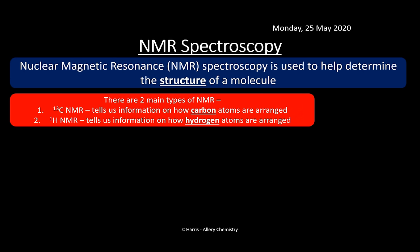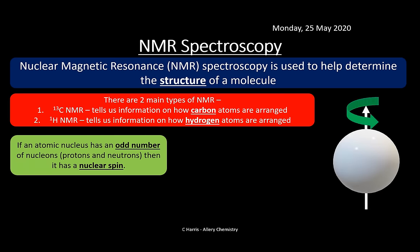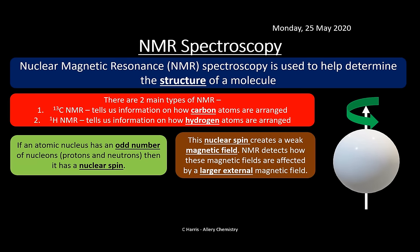If an atomic nucleus has an odd number of nucleons (protons and neutrons), it has a nuclear spin — it can spin around. This spinning creates a weak magnetic field. NMR detects how these magnetic fields are affected by a larger external magnetic field. This introduction helps you understand how an NMR machine works, which then helps you appreciate what NMR can do and what you're looking for.